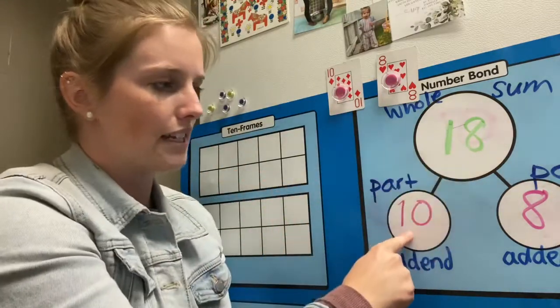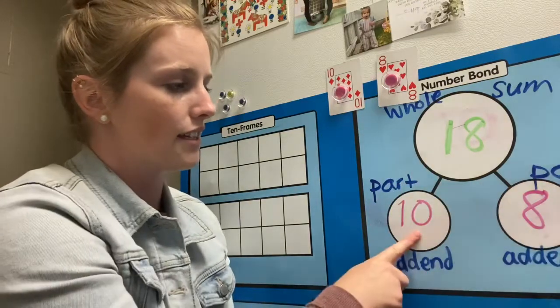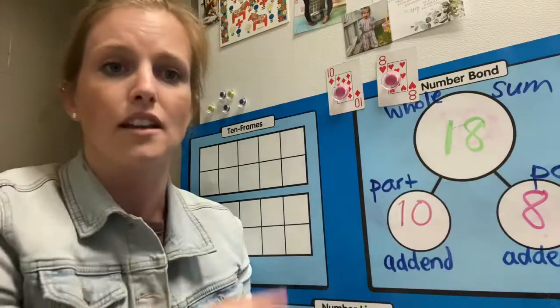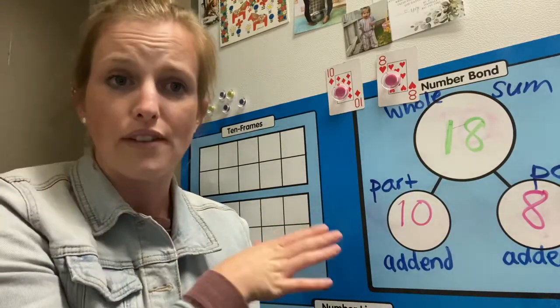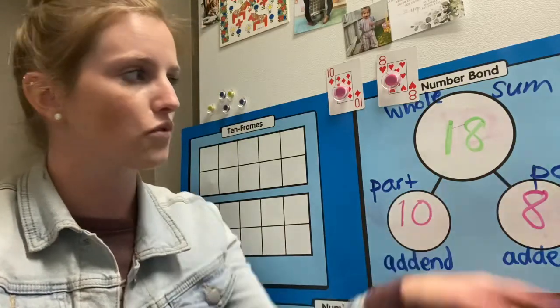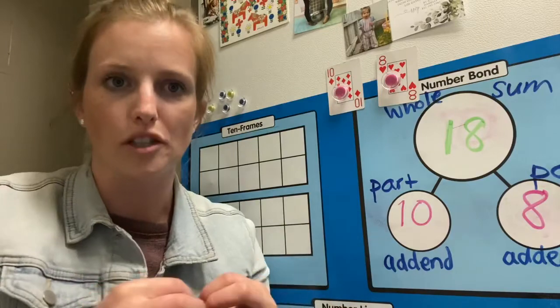18 minus 10 is the same as 8. 18 minus 8 is the same as 10. 8 plus 10 is the same as 18. So this builds a fact family for students to be able to access all those facts really easily. And it's a very clear way for them to help see the relationship between numbers.